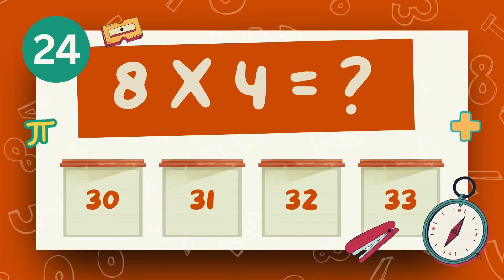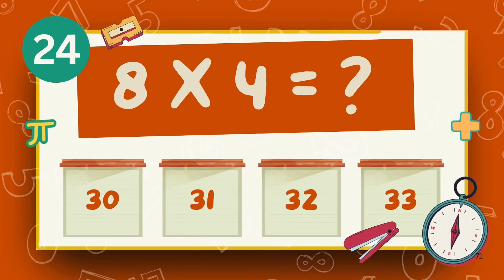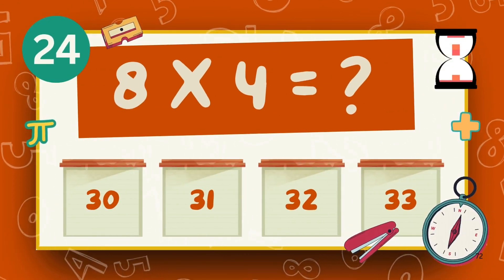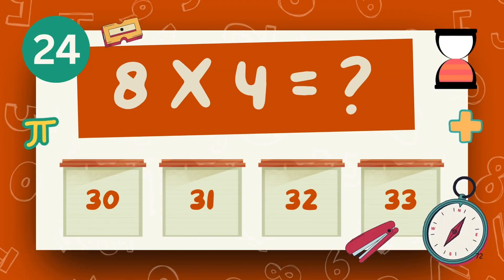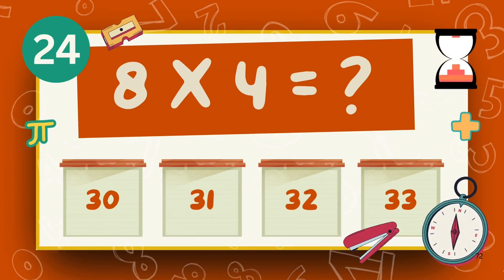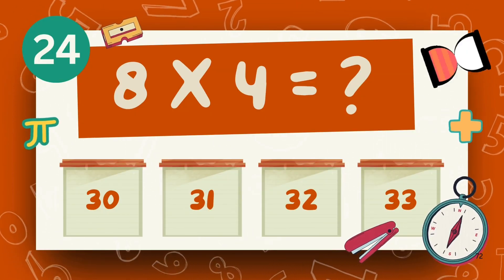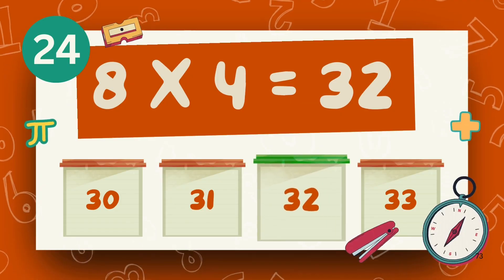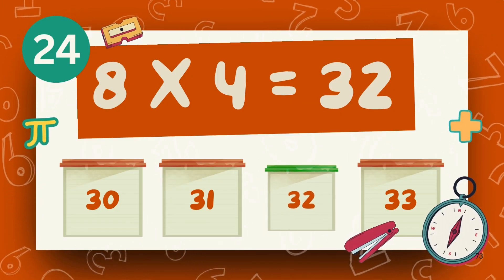What is 8 times 4? What is 9 times 4? The answer is 32.